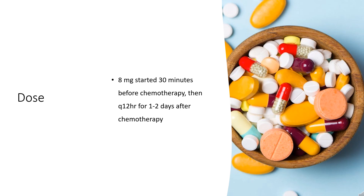Spinal opioid-induced pruritus (off-label) — Prophylaxis: 4–8 mg administered 20–30 minutes prior to spinal opioid therapy; may repeat dosing at 12, 24, 36, and 48 hours after spinal opioid dosing. Treatment: 4–8 mg. Ataxia (off-label): 4–8 mg PO every 12 hours for up to 3 weeks. Alternatively, 12 mg daily for 4 days.